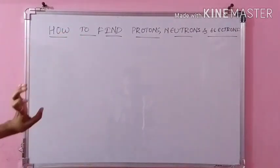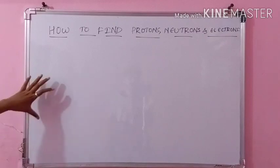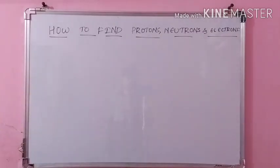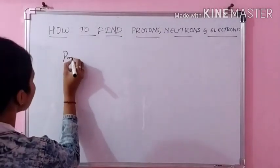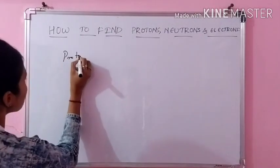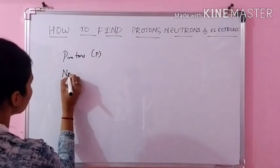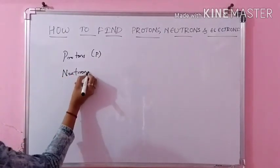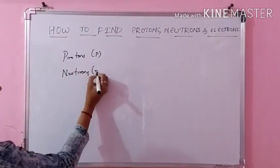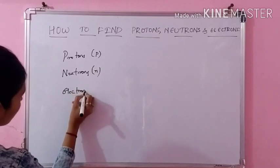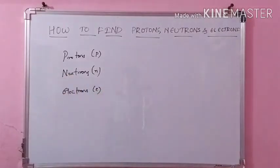So these are the basic atomic particles. Now we will try to understand, if any element or atom is given, then how to determine protons, neutrons and electrons. We will take protons as P, neutrons as N, and electrons as E. So we need to find all these three.